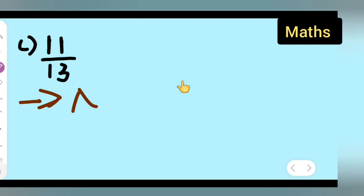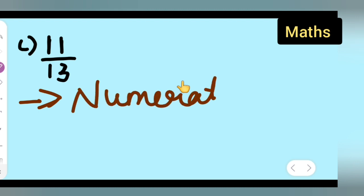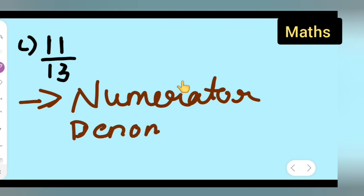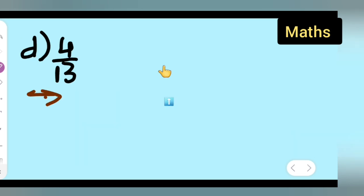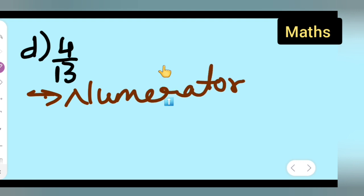For the third fraction, write down the numerator and the denominator. Here your numerator is 11 and denominator is 13.